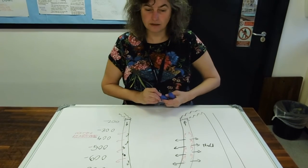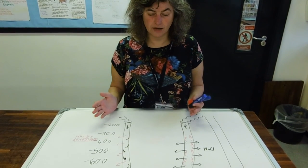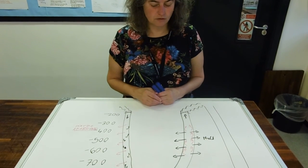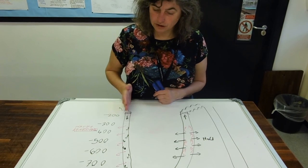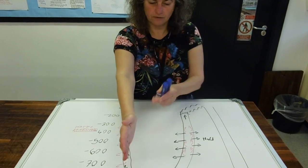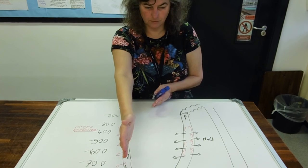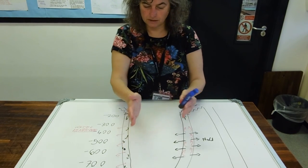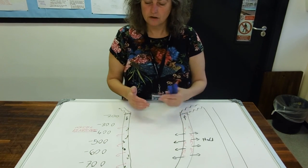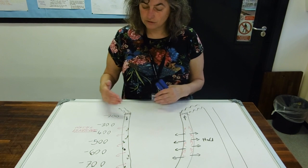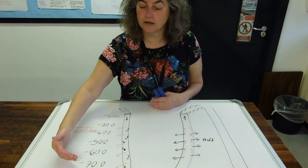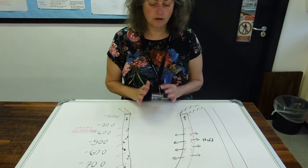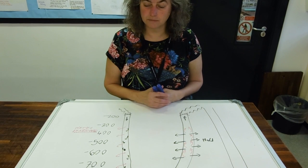You might see a term called counter-current multiplier banded around. Counter-current, this tube, the fluid's going that way. This tube, the fluid's going this way. So they're going in opposite directions. Counter-current, multiplier, because the longer the loop, the bigger the salt concentration gradient you can make. And we'll come back to that in a later video about adaptations.